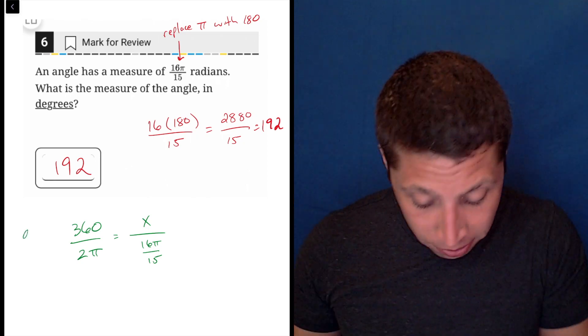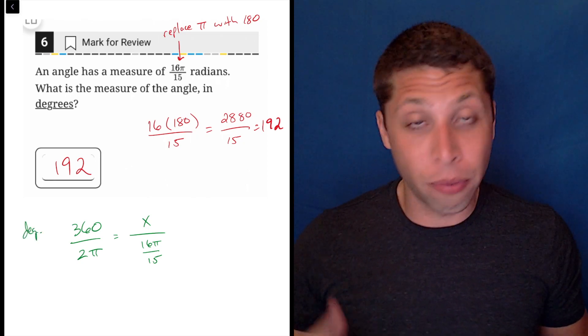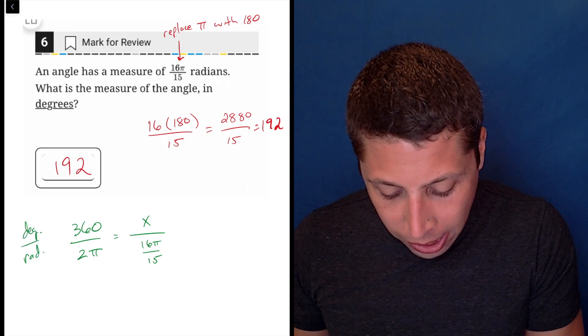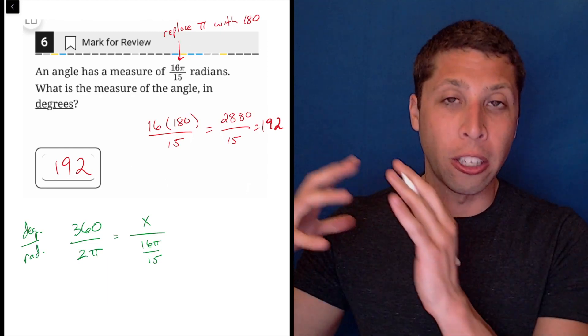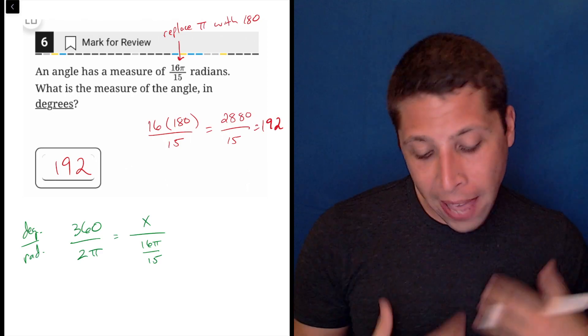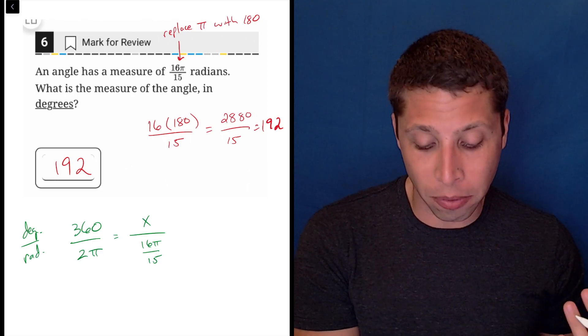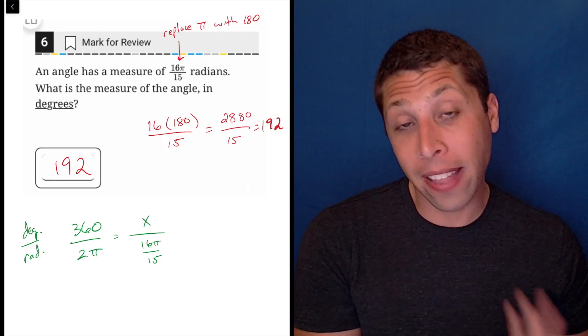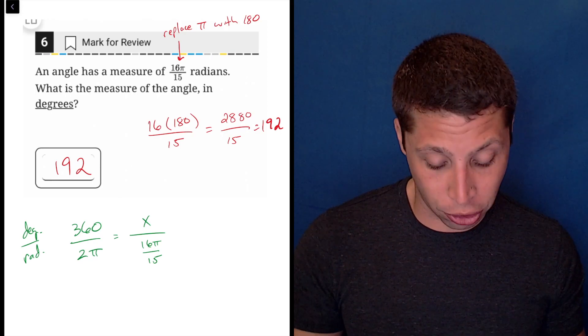So the number of degrees are on the top of both fractions, and the number of radians are on the bottom. So I'm using the conversion that they just give me on every test. I don't have to memorize it. It's given to me. And then I'm using the fact that I don't know the number of degrees. So that's my x. And then the radians are given to me. And now it's just a matter of solving this ratio.